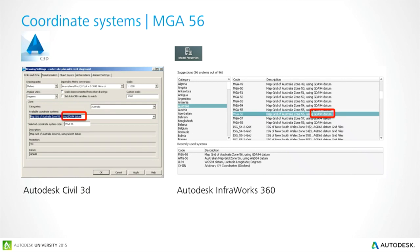In Civil 3D and InfoWorks 360, to find the setup for the Map Grid of Australia, you can right-click on one of the settings in Civil 3D and configure that setting for MGA56. When you set up your InfoWorks 360 project, you set it up to those coordinate systems, and then all data you gather — whenever you bring it in or drag and drop it — will always come in at the correct coordinates.